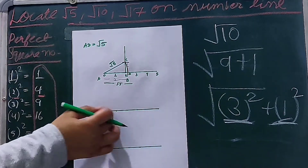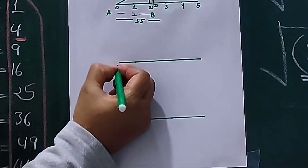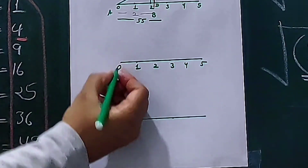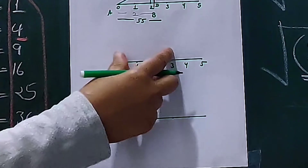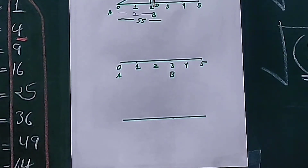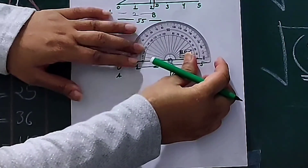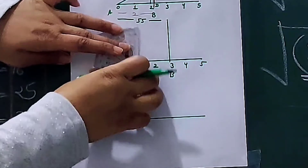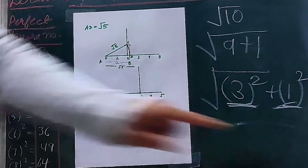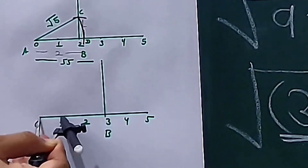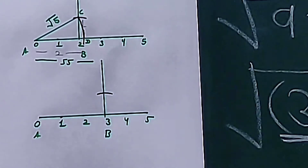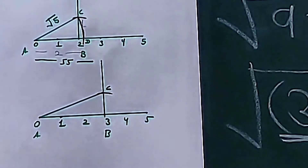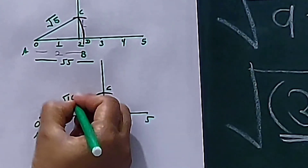Similarly, make a number line and mark points at equal distance: 0, 1, 2, 3, 4, and 5. As 3 is our first number, we will take AB as 3 units. Now make a perpendicular on point B for root 10. Our second number is 1, so measure 1 unit from here and make a cut on this line at point C. Join point C to point A. This line CA is equal to root 10.